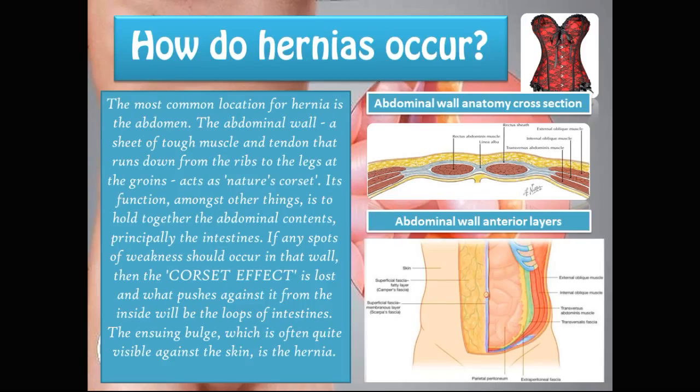So how do hernias occur? The most common location for a hernia is the abdomen. The abdominal wall — a sheet of tough muscle and tendon that runs down from the ribs to the groins — acts as nature's corset. Its function, among other things, is to hold together the abdominal contents, principally the intestines. If any spots of weakness should occur in that wall, the corset effect is lost and the loops of the intestines push against it from the inside. The ensuing bulge, which is often quite visible against the skin, is the hernia.